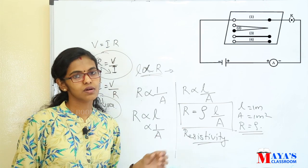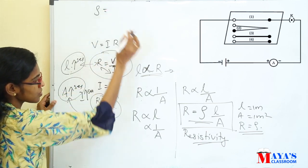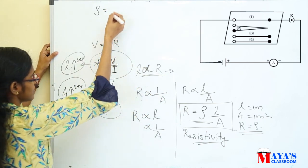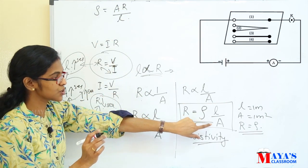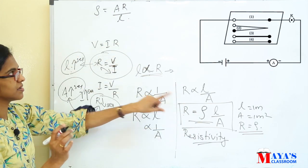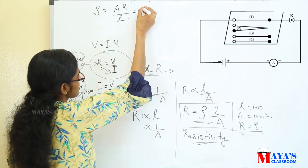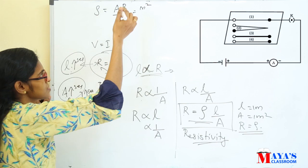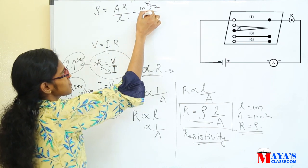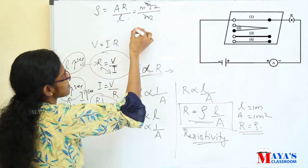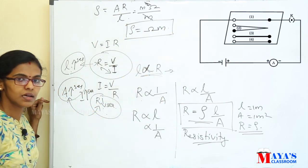What is the unit of this constant, resistivity? We can find it from the equation: rho is equal to A times R divided by L. A is area of cross-section with unit meter squared, R is resistance with unit ohm, and L is length with unit meter. Therefore, the unit of resistivity rho is ohm meter.